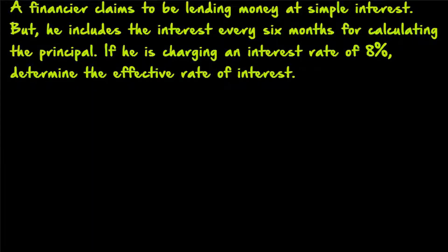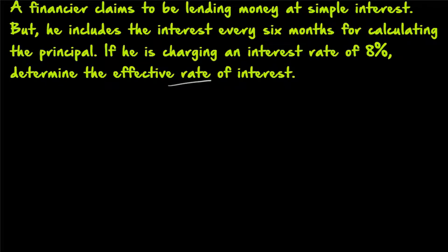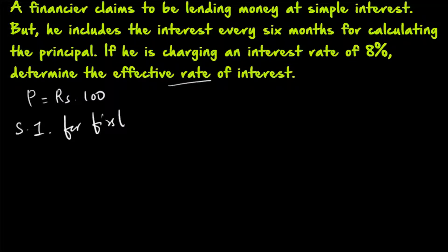Let us see one more example to make the concept clear. Here, a financier claims to be lending money at simple interest but includes the interest every 6 months for calculating the principal. If he is charging an interest rate of 8%, determine the effective rate of interest. Here also we have to find out the rate of interest. Since rate of interest is always expressed in percentage, we take P equal to rupees 100, and find the simple interest for the first 6 months, then for the next 6 months with the changed principal.